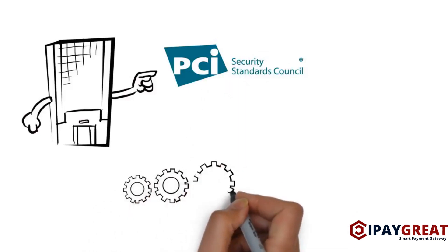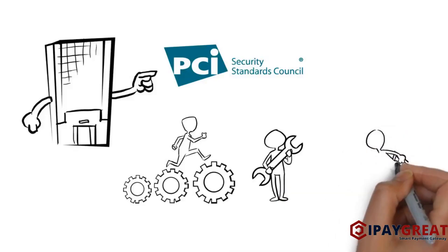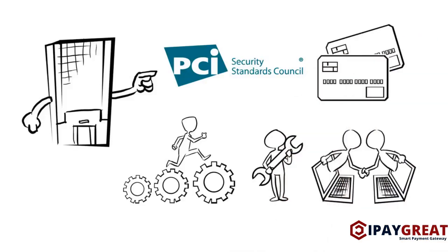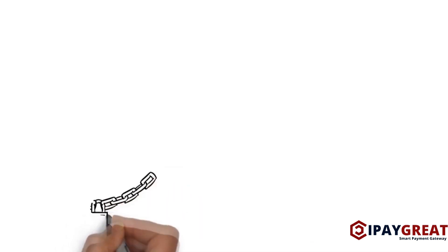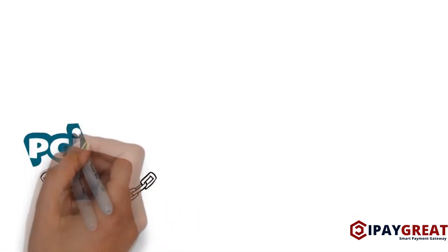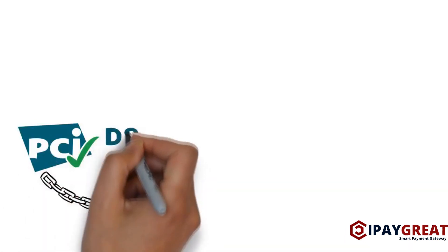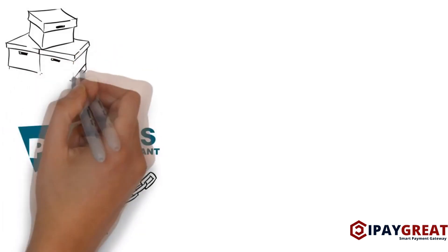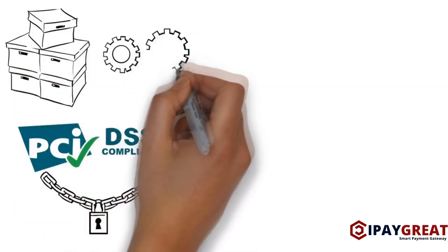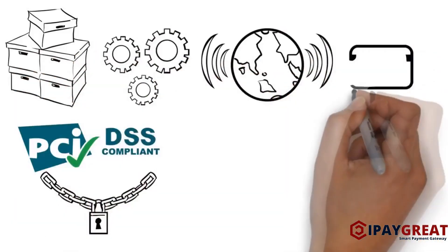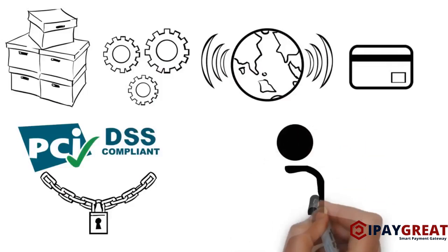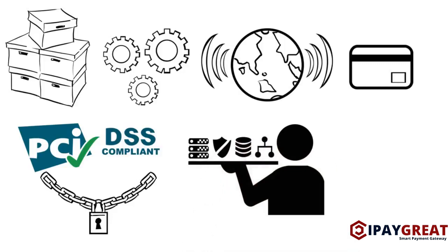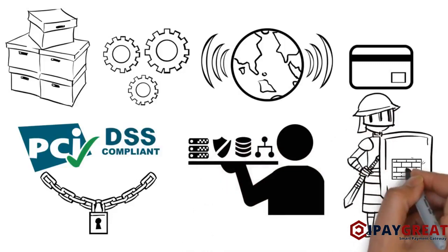The council is responsible for the development, enhancement and dissemination of international security standards for credit cards. The security standard our organization needs to comply with is the Payment Card Industry Data Security Standard, PCI DSS. The PCI DSS applies to all entities that store, process or transmit cardholder data. It is also applicable to all service providers that provide security services to protect cardholder data, such as a firewall management service.